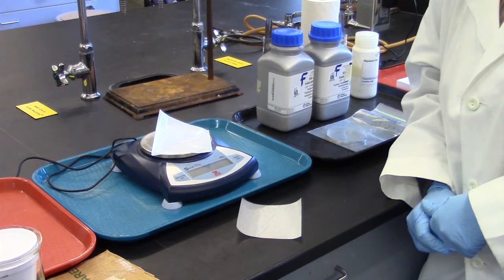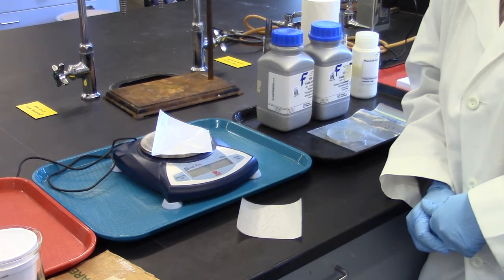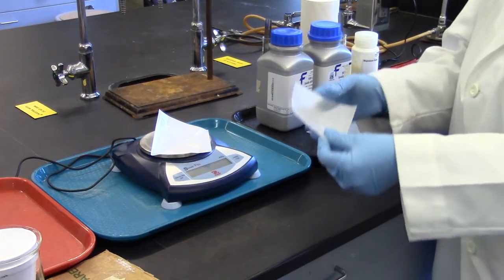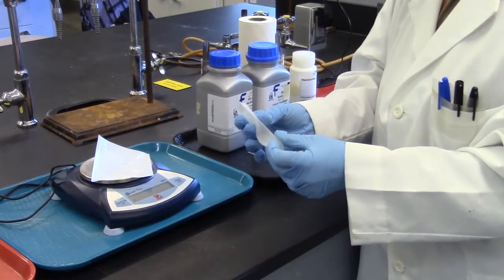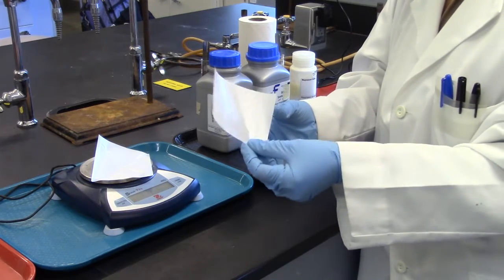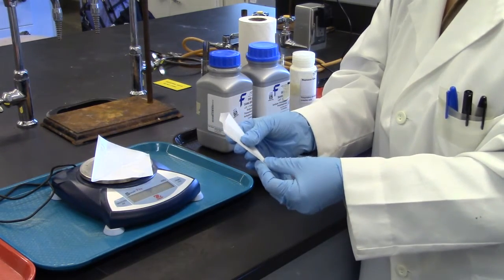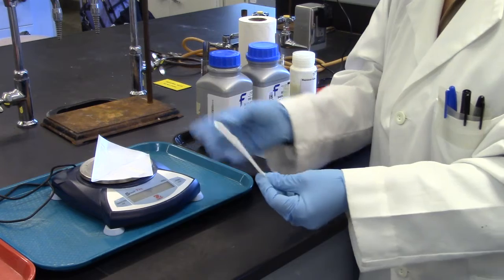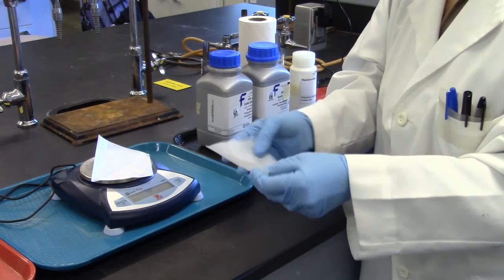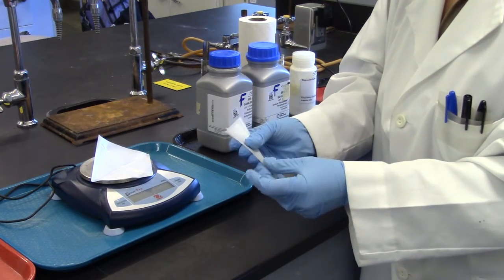Now we are going to do Part B, the enthalpy of solutions. The first thing you will need to do is weigh out two samples, which begins by preparing the weighing paper so that the transfer of the solid to the calorimeter is easier.